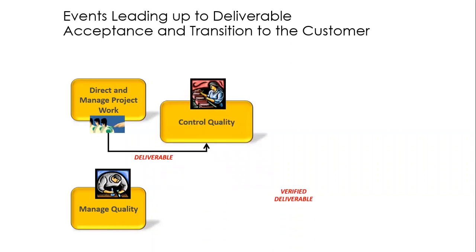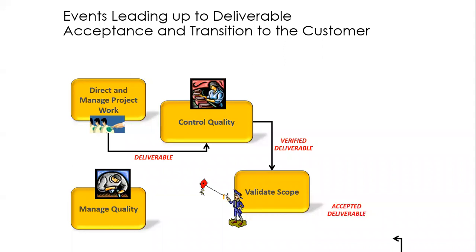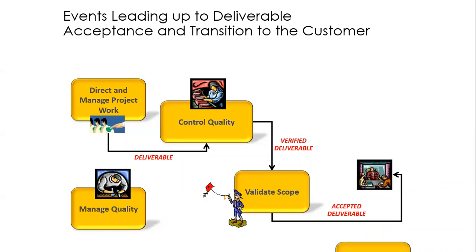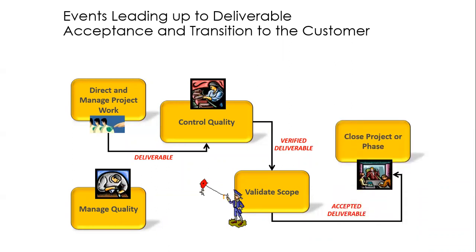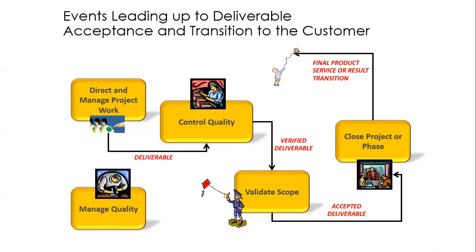As usual, our deliverable gets checked. Assume it passes the test — we get a verified deliverable, it goes to validate scope, tested by the customer. And this time, assume the customer is happy. We get an output known as accepted deliverable. That accepted deliverable goes to close project or phase. This is where you're closing out either the project or phase. The major output you get as a result of this is final product, service, or result transition. Also remember that you do get a final report. This is the most direct effect of an accepted deliverable going into close project or phase — you need to transition that deliverable.